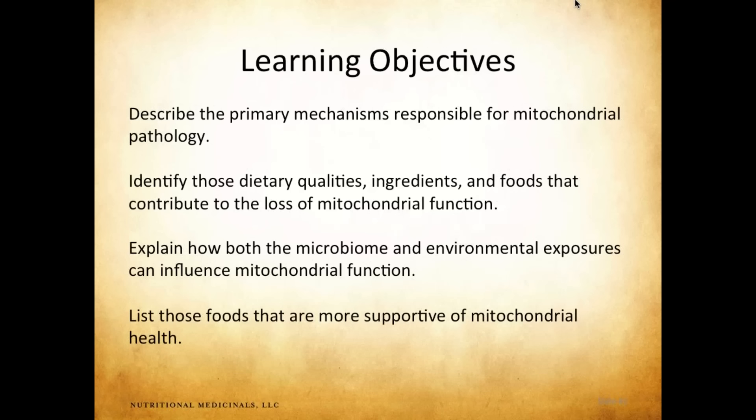What we're looking at this afternoon are the primary differences between healthy mitochondria and damaged mitochondria and all the different factors that can contribute to what we call mitochondrial pathology. Our intent is to learn about the primary mechanisms responsible for this pathology — why mitochondria become less functional — and to identify food choices and specific nutrients that contribute to mitochondrial pathology. We'll also look at how the microbiome and environmental exposures influence mitochondrial function, and ultimately how we can choose healthier, more supportive foods. Those are our objectives.